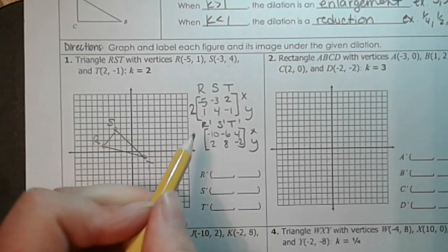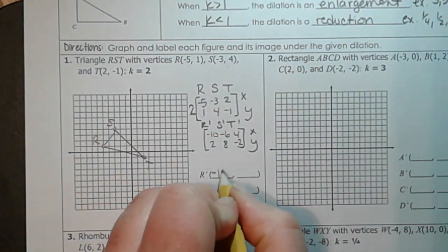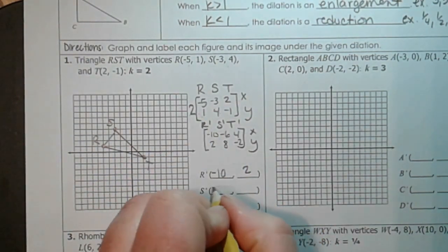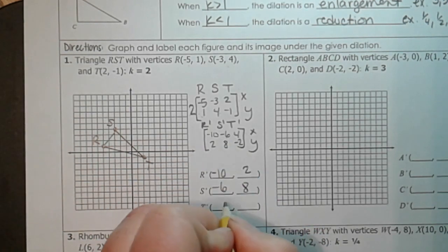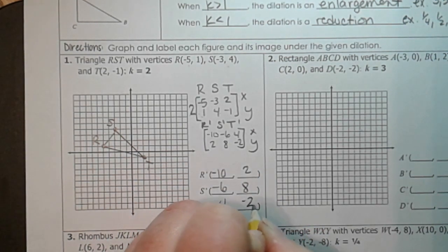So these are our new points. For r prime, we have negative 10, 2. For s prime, we have negative 6, 8. And for t prime, we have 4, negative 2.